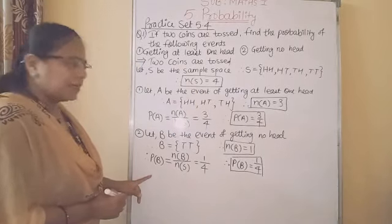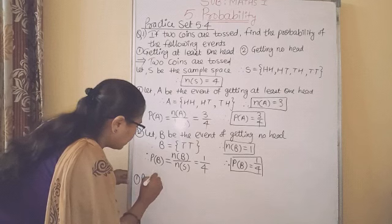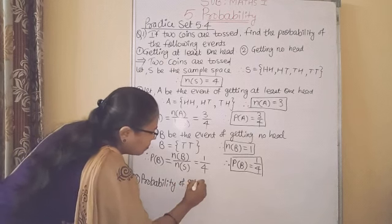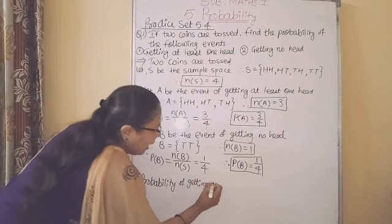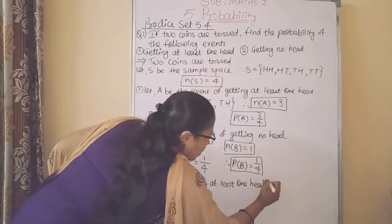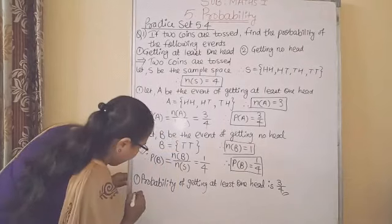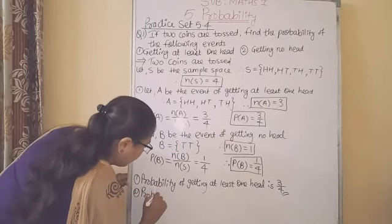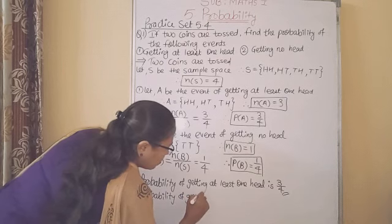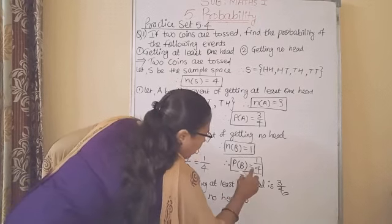We will write the answers. First answer: probability of getting at least one head is 3 upon 4. Second answer: probability of getting no head is 1 upon 4.